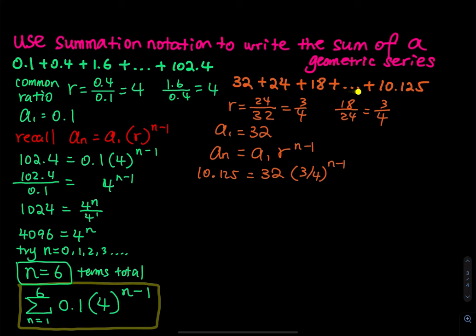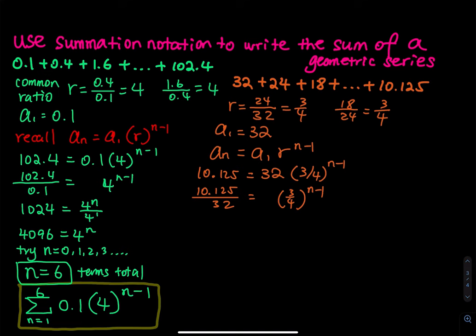I want to find out how many terms are in this geometric series. Divide both sides by 32: you get 10.125 divided by 32 equals (3/4) raised to n minus 1. This division gives a decimal, so in your calculator type 10.125 divided by 32 and press enter. Do not approximate. Then hit the math key — as I discussed in the previous video — and you will see FRAC with an arrow. Click that and press enter. That converts the decimal answer back to a fraction.